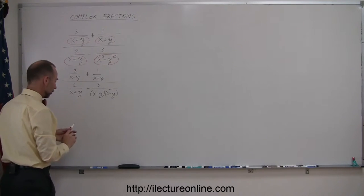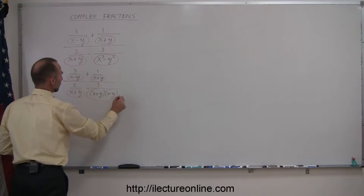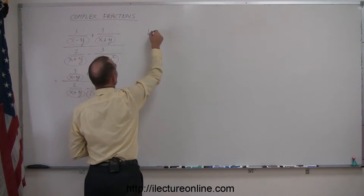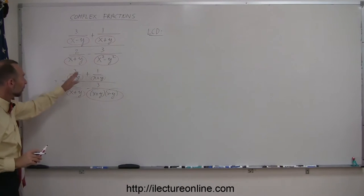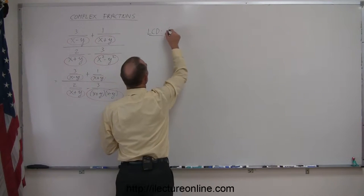And again, I'm going to circle all those denominators: x minus y, x plus y, x plus y, and the product of x plus y and x minus y. So, to solve these problems, the way I like to solve them, I want to find the lowest common denominator, and I think it's pretty clear that in this case the lowest common denominator of all these fractions is simply the product of the two, which is x plus y times x minus y.